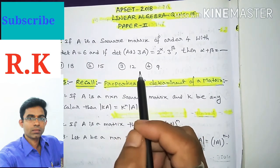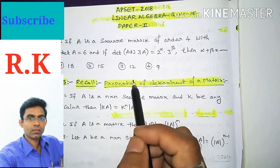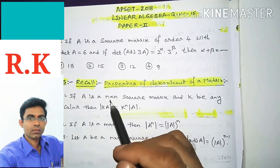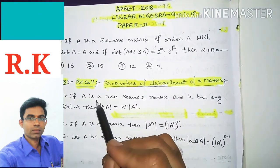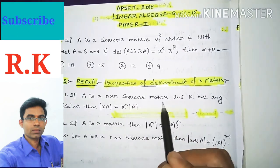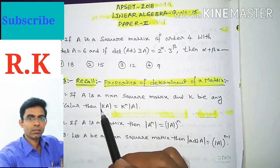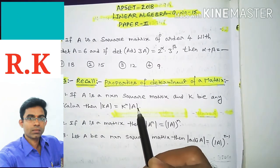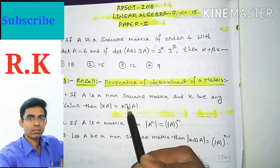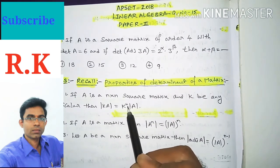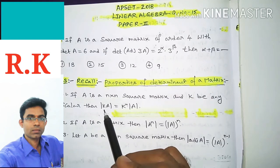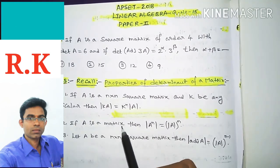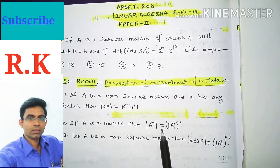This question is about the determinant of a matrix, so we first recall properties of determinants. The first property: if A is an n×n square matrix and k is any scalar, then det(kA) equals k^n times det(A), where n is the order of the given matrix.